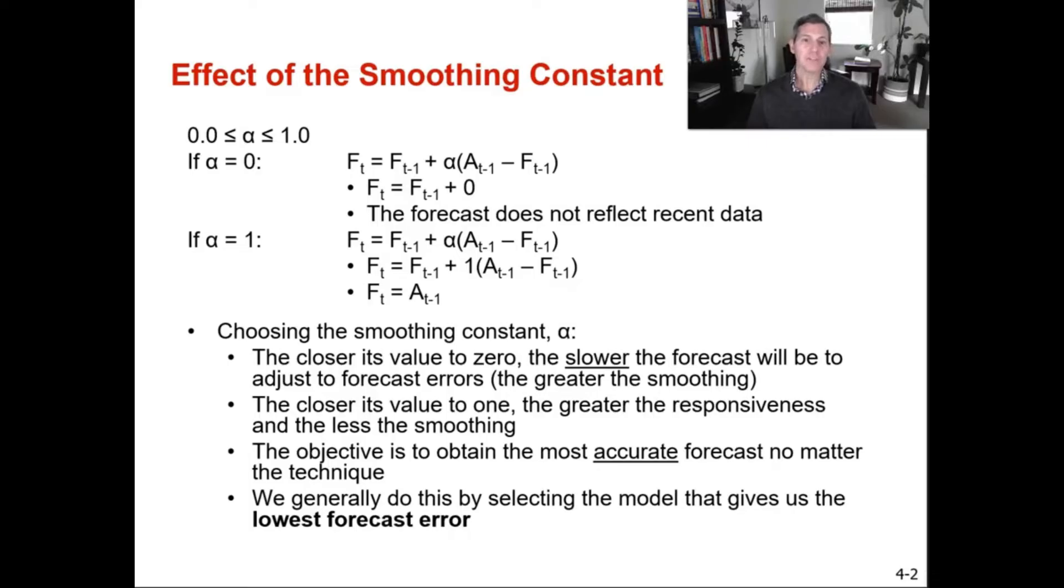If your alpha is closer to one, so if you pick one that's closer to one, that's really close to your naive forecast where you're going to get really close to the previous period's demand. So your alpha of one is your naive. You choose that when your demand or your sales or whatever you're trying to forecast is likely to change when there's a little bit more volatility. So the closer to one if there's more volatility, closer to zero if you're good with averages.